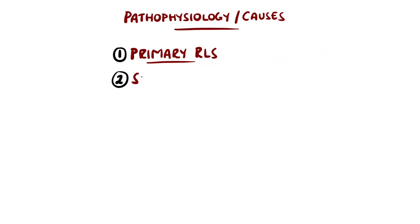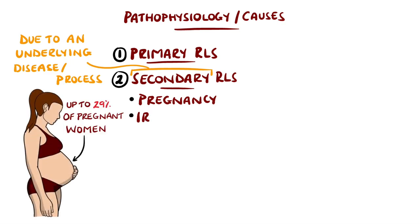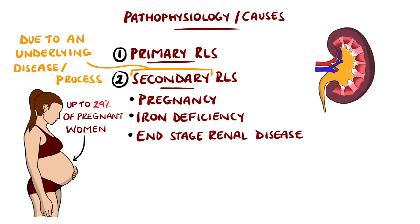Secondary Restless Leg Syndrome is the result of another underlying process. Examples could be pregnancy, end-stage renal disease, with 25 to 50% of patients on hemodialysis experiencing it.